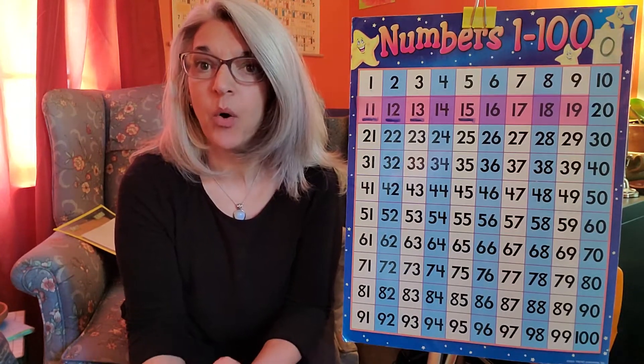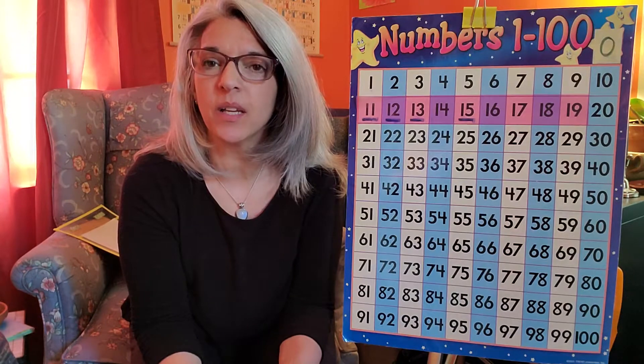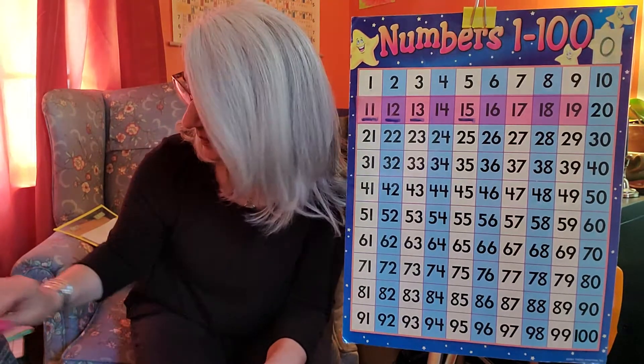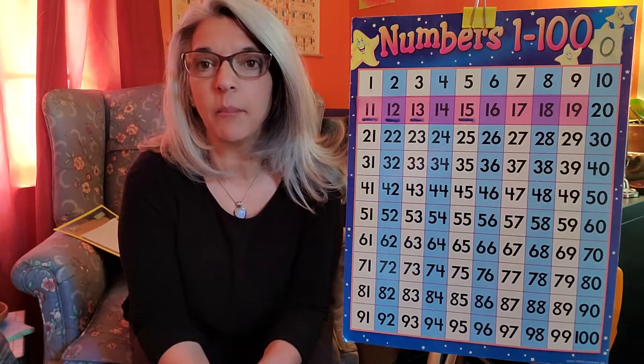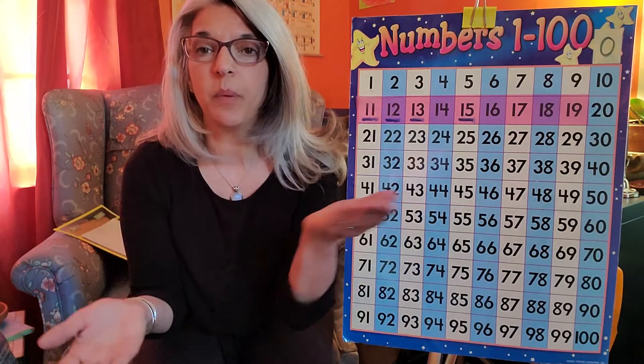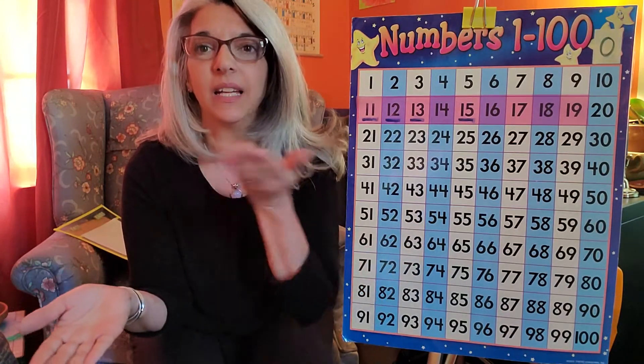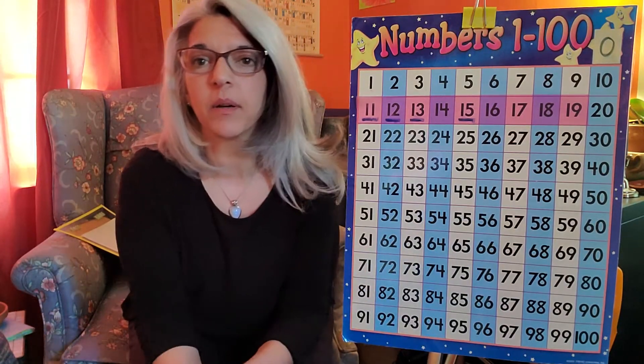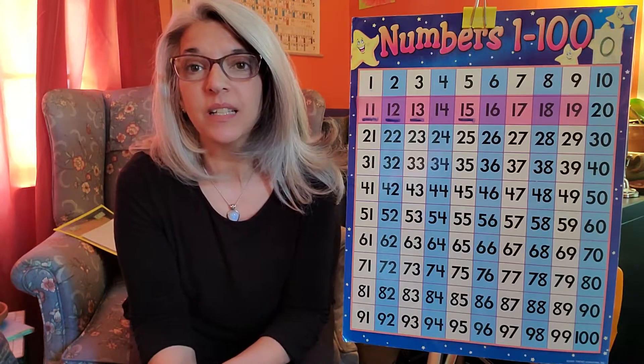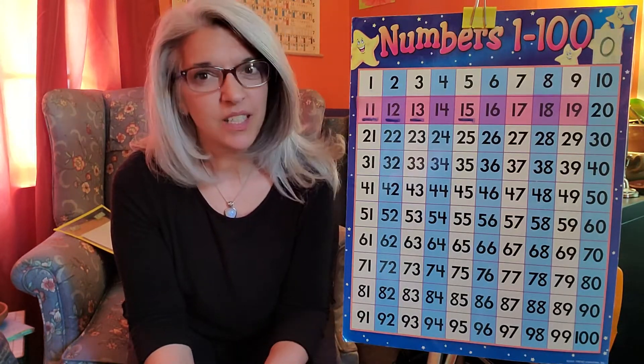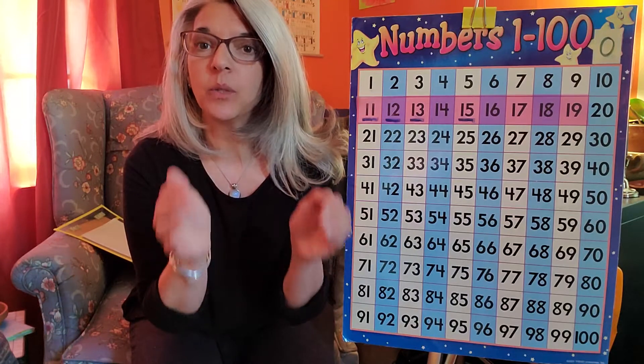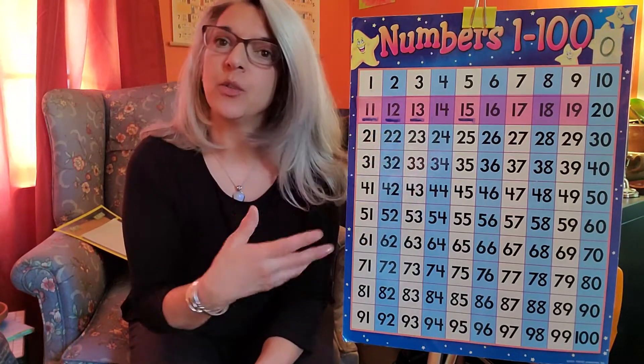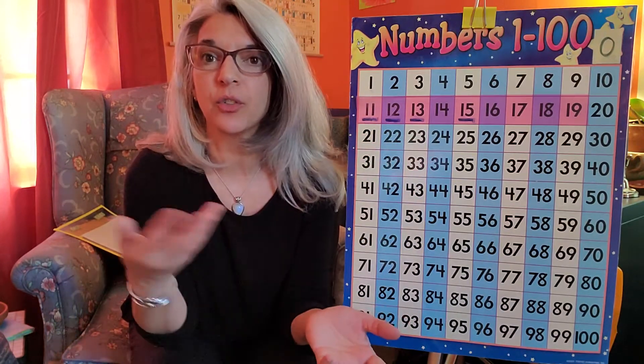We talked about how when we compose and decompose numbers it's a little different. When we compose teen numbers we're going to take the two parts which will be a ten and some more equals the teen number. When you decompose a teen number it's just the opposite. You start with the whole teen number and then you split it into its two parts, your ten and some more.